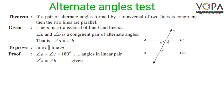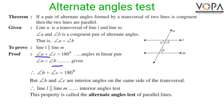We have to prove that line L is parallel to line M. From the figure, angle A plus angle C equals 180 degrees — they are angles in a linear pair. Since angle A equals angle B, we can substitute to get angle B plus angle C equals 180 degrees. But angle B and angle C are interior angles on the same side of the transversal, so by the interior angles test, line L is parallel to line M.